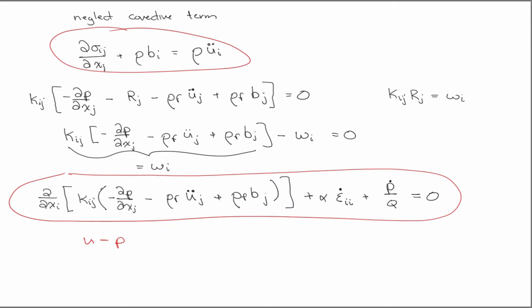For steady state problems, you'll recover the classical consolidation theory that you probably saw as an undergraduate. So, for steady state, the u double dot goes to zero.